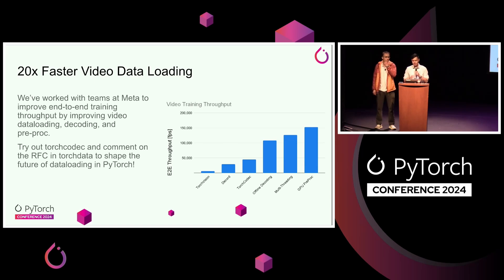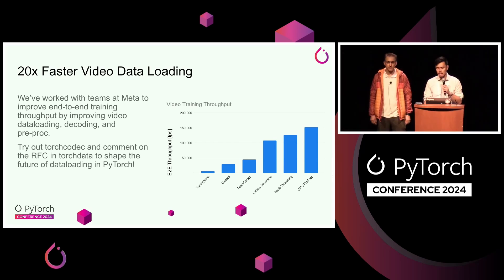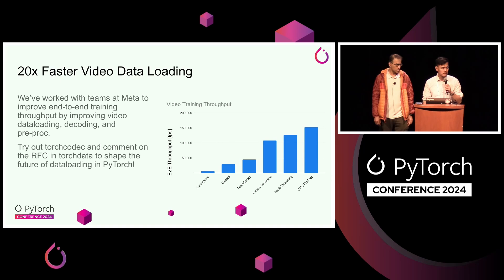We're going to discuss things like how we improved the video decoder. There's a new decoder you'll be able to try out in open source, available through pip. We're also going to talk about some of the experimental work we're doing in Torch Data to enable things like multi-threading and GPU pre-processing, which the current data loader doesn't really support very well.